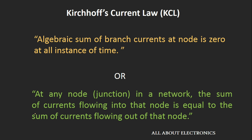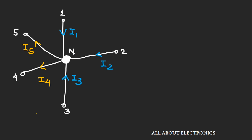Let's understand it by taking a simple example. Let's say we have a node in the network which contains five branches. The currents in these five branches are I1 to I5 respectively. Here, as you can see, currents I1, I2, and I3 are entering into the node, while currents I4 and I5 are leaving the node.